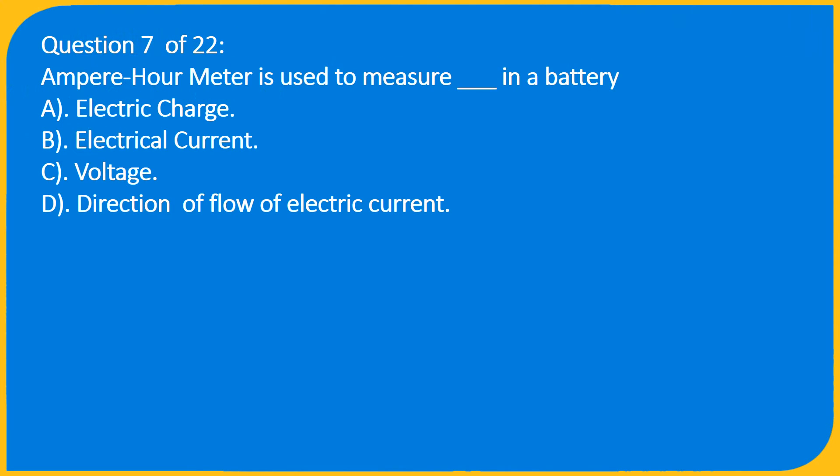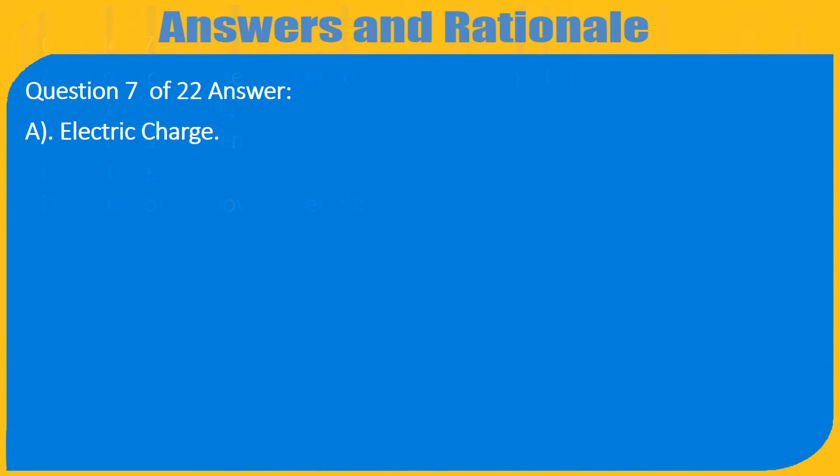Question 7 of 22: An ampere hour meter is used to measure which of the following in a battery? A. Electric charge, B. Electrical current, C. Voltage, D. Direction of flow of electric current. Answer: A. Electric charge.